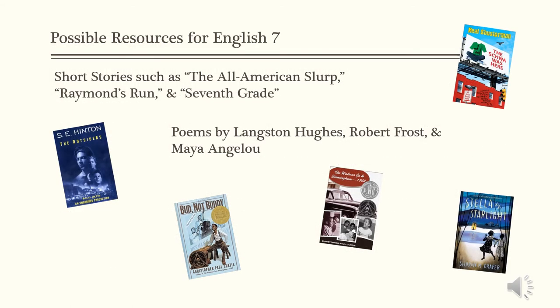A variety of literature is read in English 7. Some of the possible short stories include All American Slurp, Raymond's Run, and 7th Grade. Poems by Langston Hughes, Robert Frost, and Maya Angelou are included in the poetry study. A few of the possible novel selections are The Outsiders, Bud Not Buddy, The Watsons Go to Birmingham, as well as other novel choices.